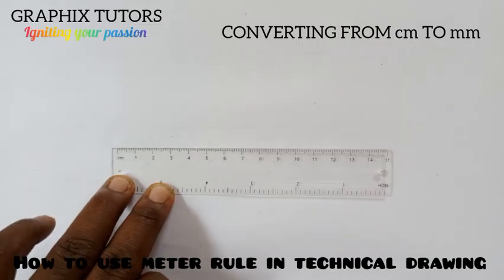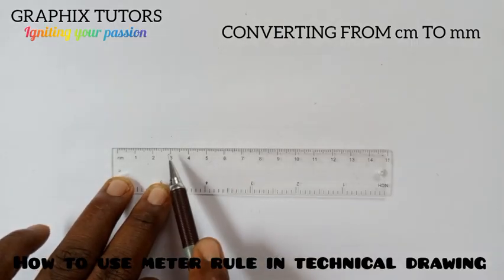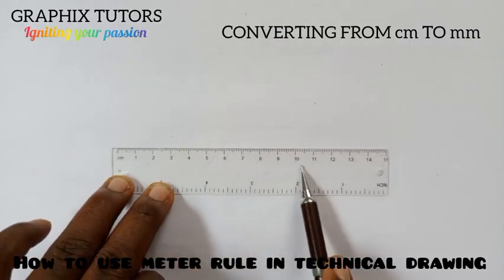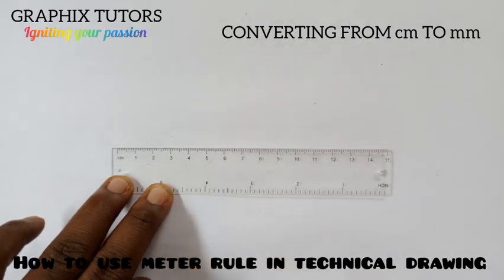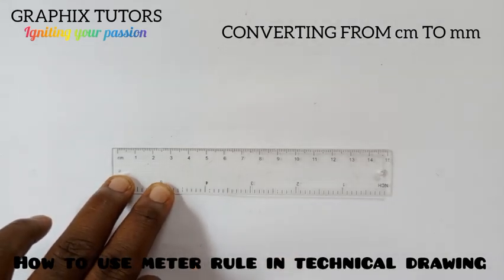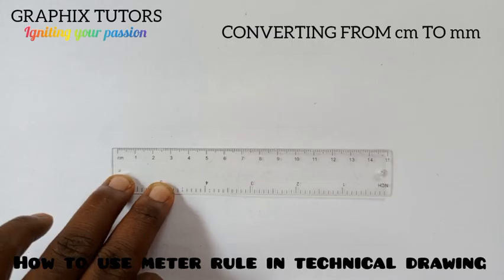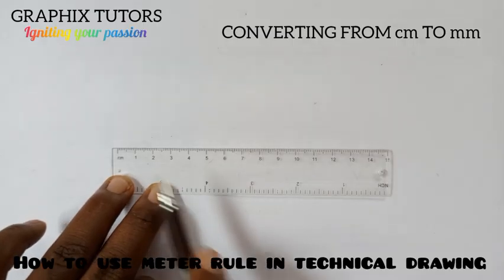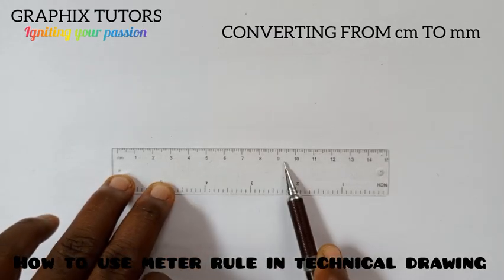So it means that in between any of these two figures here, between three and four is one centimeter. If I multiply it by 10, I'll be having 10 millimeters. So in between each of these values is one centimeter, which is also 10 millimeters.